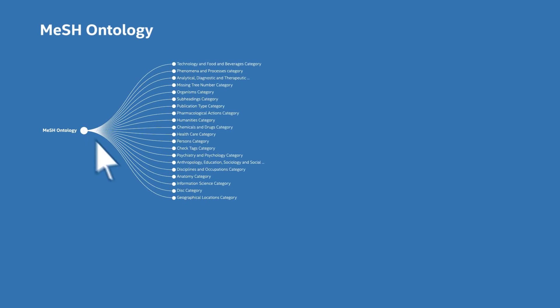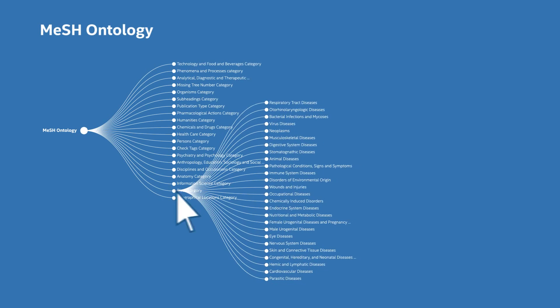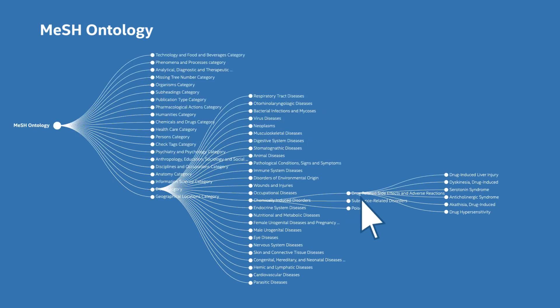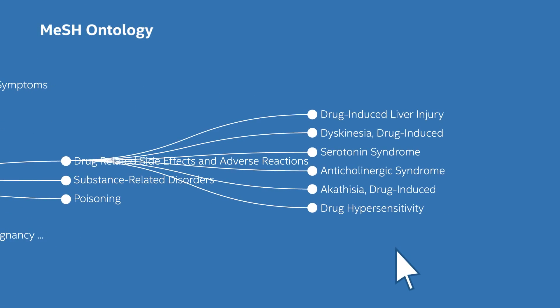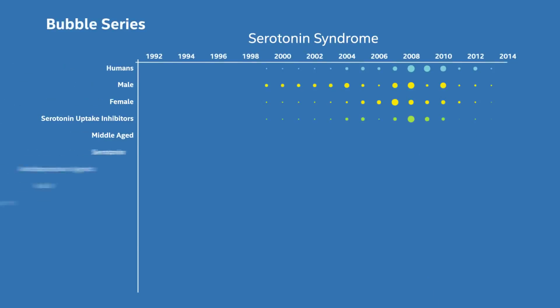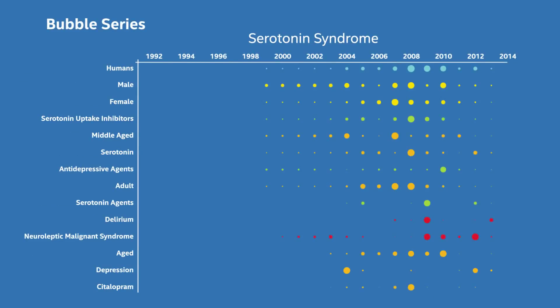We can use the Intel Graph Analytics Toolkit to interactively explore the hierarchy of MeSH terms to identify connections and trends. For example, if we want to discover the top 15 MeSH terms most often associated with serotonin syndrome, we can easily derive those answers instantly.